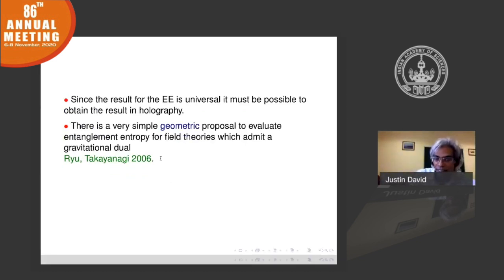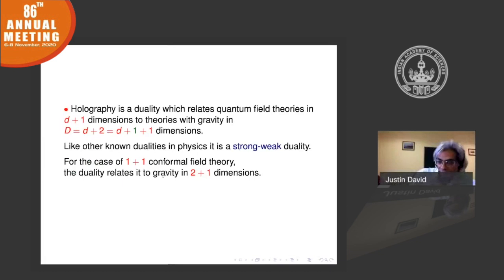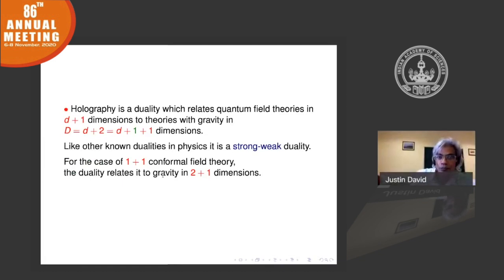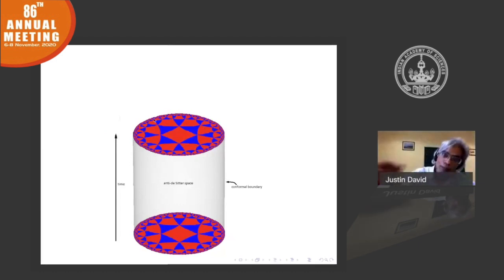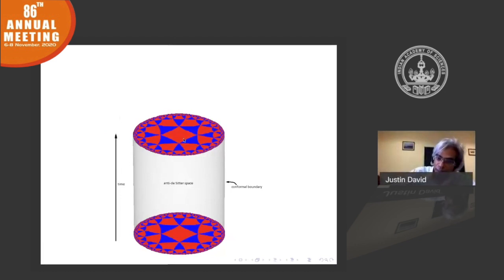Holography is a duality — a novel one. It relates theories living in, say, one-plus-one dimensions to gravitational theories living in one higher dimension — two-plus-one dimensions in this case. In the picture, the conformal field theory lives on the outer surface of a cylinder. The time runs along the cylinder, and the gravitational theory is described by filling up that cylinder with hyperboloids — a space called anti-de Sitter space.